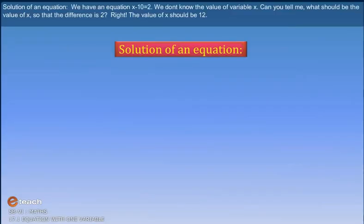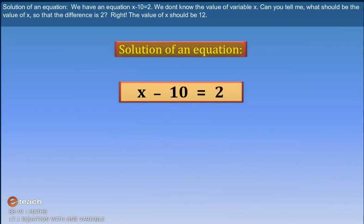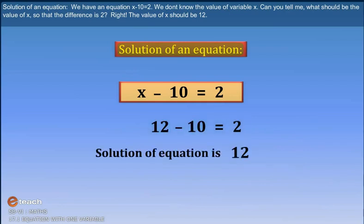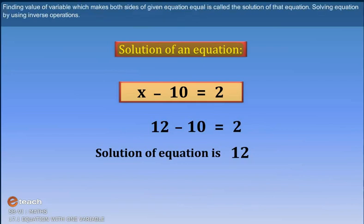Solution of an equation: We have an equation x minus 10 is equal to 2. We don't know the value of variable x. Can you tell me what should be the value of x so that the difference is 2? Right, the value of x should be 12. Finding value of variable which makes both sides of given equation equal is called the solution of that equation.